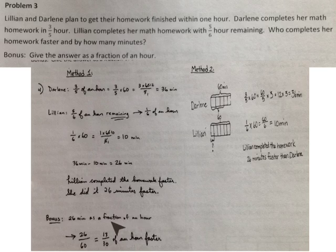For bonus, we needed to write 26 minutes as a fraction. 26 over 60. There are 60 minutes in 1 hour, so 26/60 can be simplified to 13/30 of an hour. We could change that to that equivalent fraction.